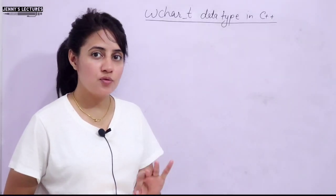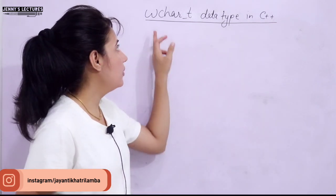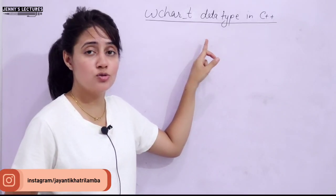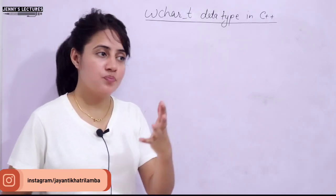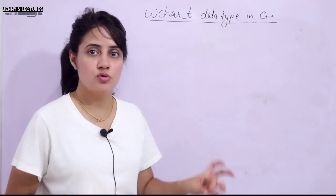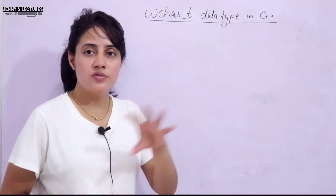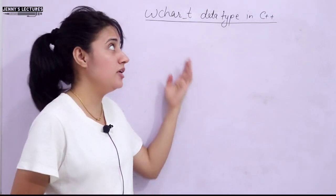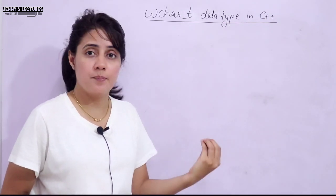In this series on learning C++ programming, in the previous video we discussed the char data type. Now in this video we will see wchar_t — the wide character data type. This is almost the same as char, used to store alphabets, digits, letters, and special symbols, but there are a few differences. We'll discuss those differences, why we need this data type if we already have char, and show a practical program.